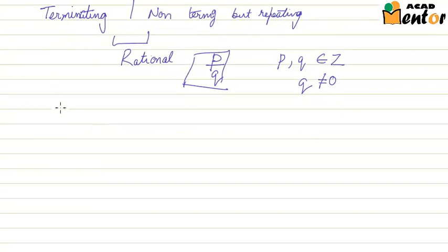For example, let us take 0.4. Now this is an example of terminating decimal number. Now can you represent this in the form of P by Q? Yes we can.